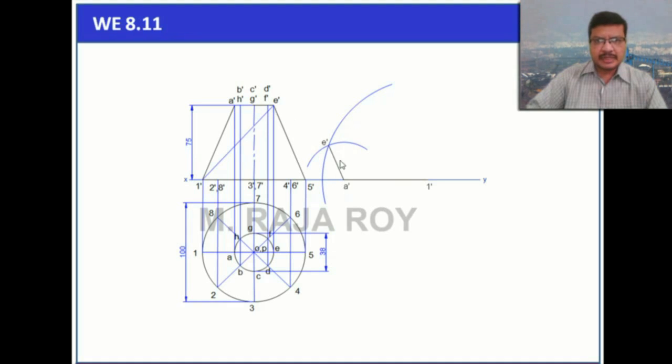Now draw a line joining A dash and E dash. Next, to get this 5 dash point, take A dash, this A dash to F dash. This particular length, that means this line length as radius, A dash as center, draw an arc.